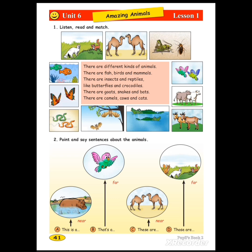Look at the pictures. There are different kinds of animals. There are fish, birds, and mammals. There are insects and reptiles. So we have five groups: fish, birds, mammals, insects, reptiles.